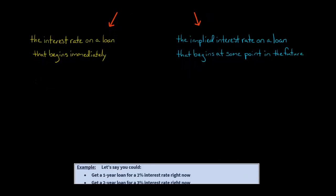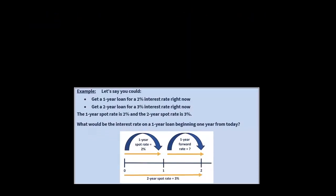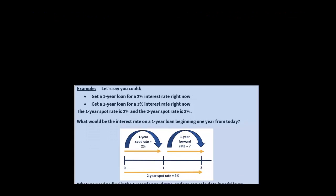Let me show you this with an example — I think it'll make it a little bit easier to understand. Let's say that right now, for a one-year loan, you could get an interest rate of 2%. That would be the spot rate for a one-year loan — 2%. For a two-year loan starting today, the interest rate is 3%. So we've got a 3% spot rate for a two-year loan and a 2% spot rate for a one-year loan.